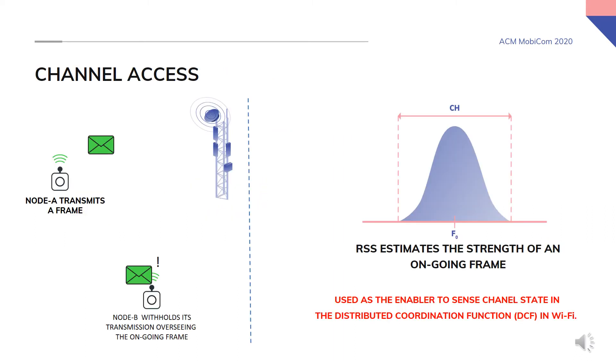CSMA/CA allows wireless nodes to avoid potential collisions by performing channel sensing. Protocols such as Wi-Fi employ algorithms such as DCF that rely on RSS to enable CSMA/CA. The key rationale is that a node estimates channel state based on RSS. When a collision is anticipated a node backs off from transmitting.